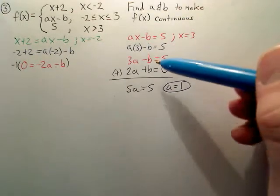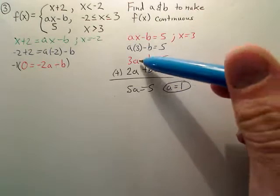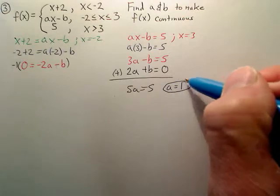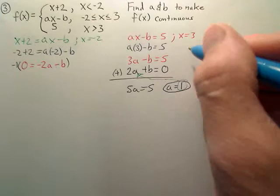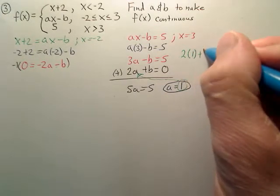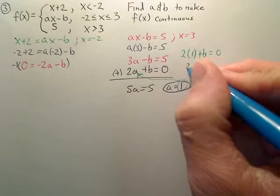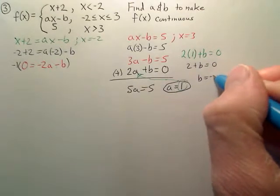How do you find b? Well, you just choose one of these two equations and plug 1 in. Let's do the second one, because b is positive. So I'm going to take it and plug it in right here for a. So we have 2 times a, which is 1, plus b equals 0. So it looks like 2 plus b equals 0, so b equals negative 2.